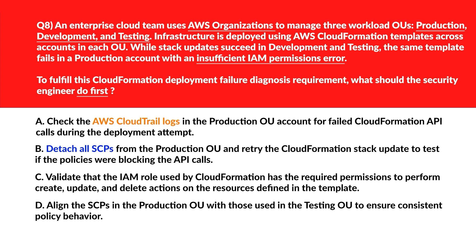We have a real-life scenario with three workloads for production, development, and testing — this is all about an insufficient IAM permission error. Option A says: check the AWS CloudTrail logs in the production OU account for failed CloudFormation API calls during the deployment attempt. CloudTrail logs reveal which API calls failed and why, helping pinpoint permission gaps without altering existing policies. Let's keep this.